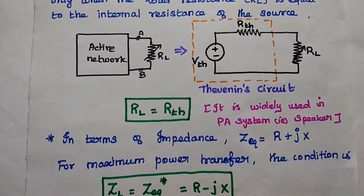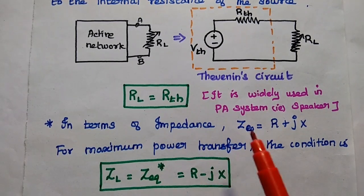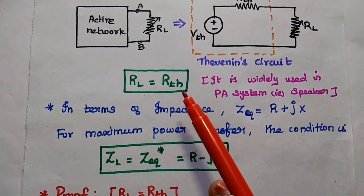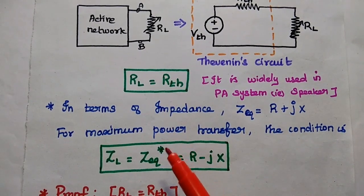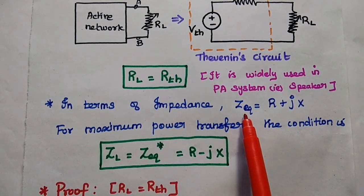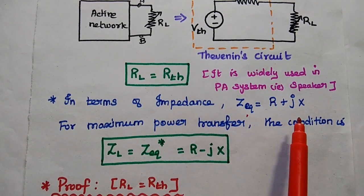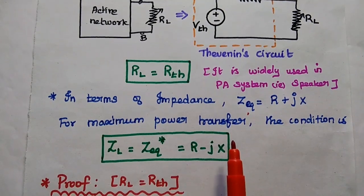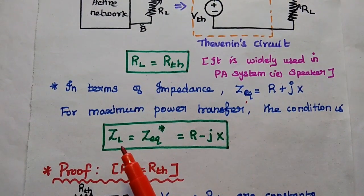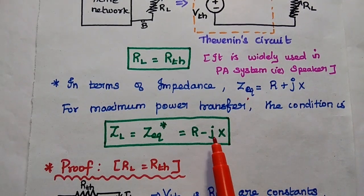At that time, maximum power is delivered to the load. This concept is widely used in PA systems — PA means public address system, that is the speaker concept. Here we are talking about the real part, that is resistance alone. But in terms of impedance, whenever we are talking about a transmission line, we consider the equivalent impedance value which has a real part and an imaginary part. The real part is the resistance value and the imaginary part is the reactance value.